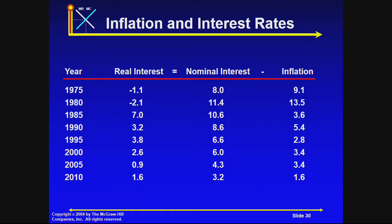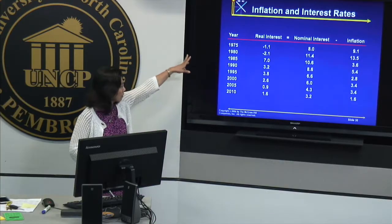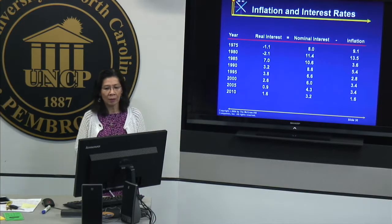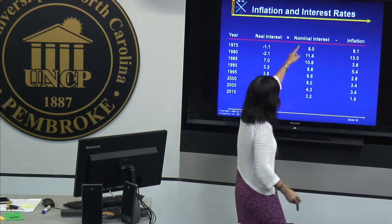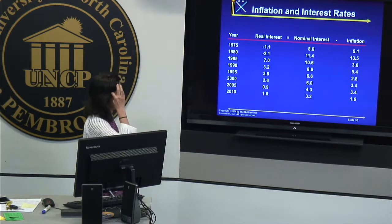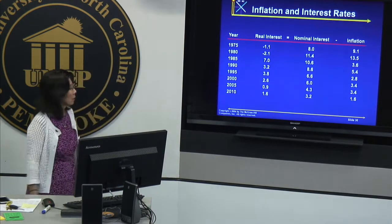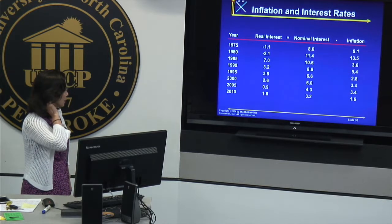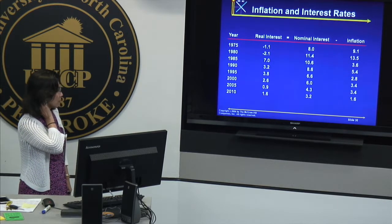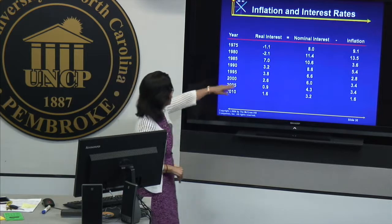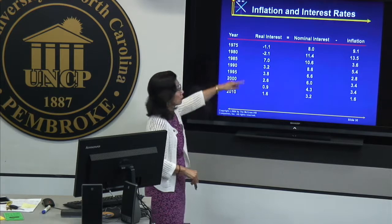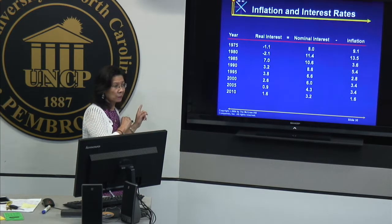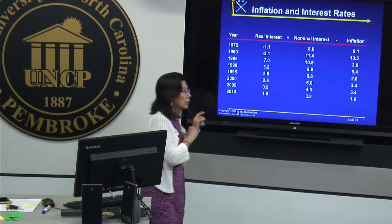Let's look at a historical example covering every five years from 1975 all the way to 2010, applying the equation: real interest rate equals nominal interest rate minus inflation rate. For the most part, the real interest rate is positive, except for two years. Those two years correspond to the two oil shocks.